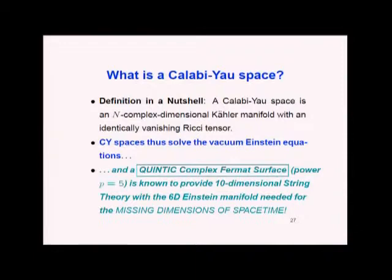So just for a quick overview: what is a Calabi-Yau space? What was Brian Greene interested in? What are the string theorists interested in? Well, a Calabi-Yau space is a particular n-complex dimensional manifold which has a very interesting property — it has a vanishing Ricci tensor.